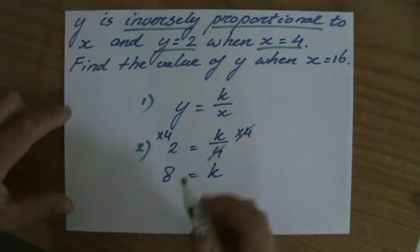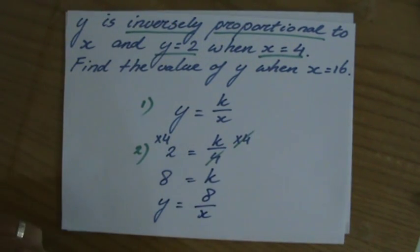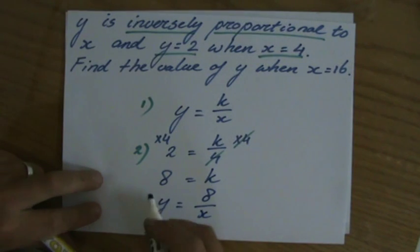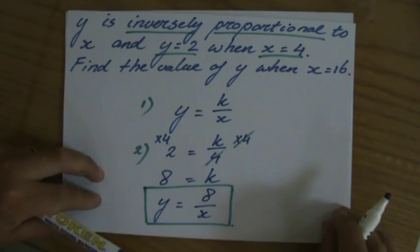So, the equation belonging to this question is y equals 8 divided by x. Inverse proportion, y equals k over x, and we just found out that that constant, k, is 8.